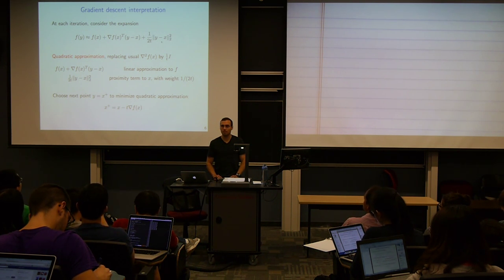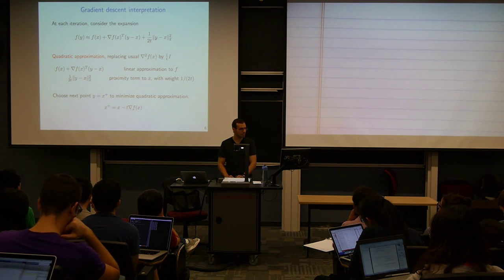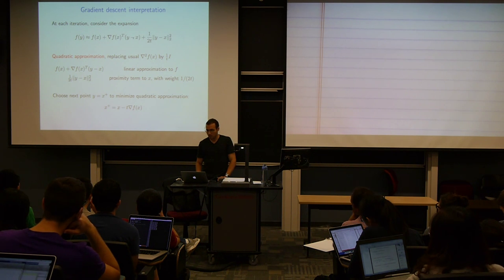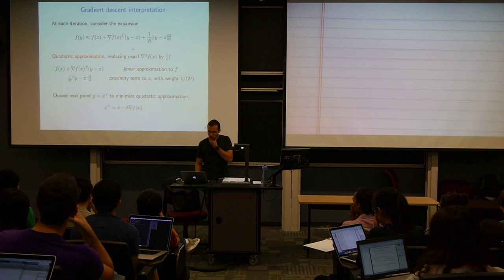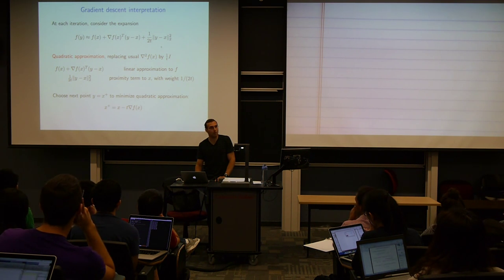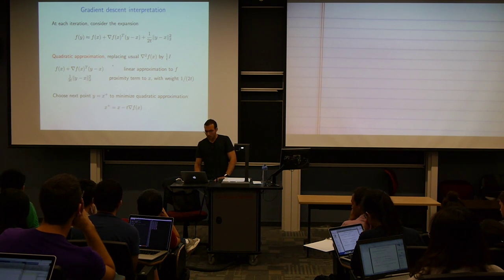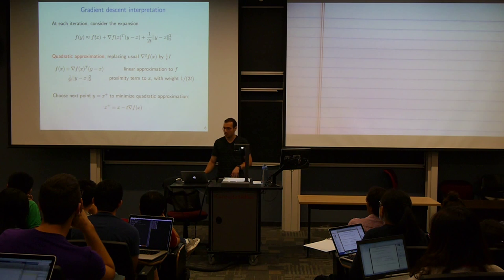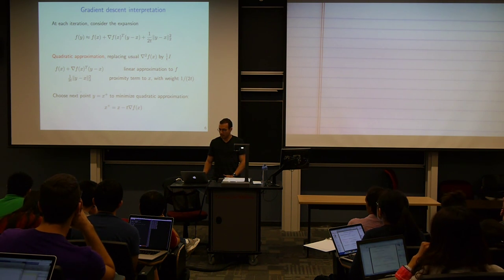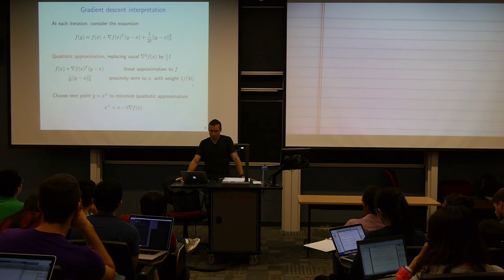So the constraint is: 1/t times the norm of (y minus x) squared. If we do this simple quadratic expansion and minimize over all y, there are two terms: the first is a linear approximation to the function — f(x) plus the gradient transpose (y minus x); the second is a proximity term to x with weight 1/(2t). We can see the role of t in gradient descent. The minimizer of this over all y is exactly the gradient descent update.